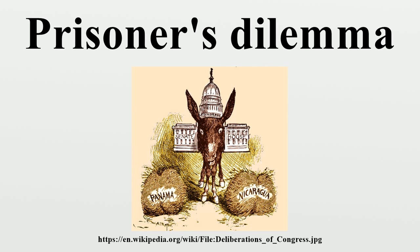Because betraying a partner offers a greater reward than cooperating with him, all purely rational self-interested prisoners would betray the other, and so the only possible outcome for two purely rational prisoners is for them to betray each other. The interesting part of this result is that pursuing individual reward logically leads both of the prisoners to betray, when they would get a better reward if they both kept silent.